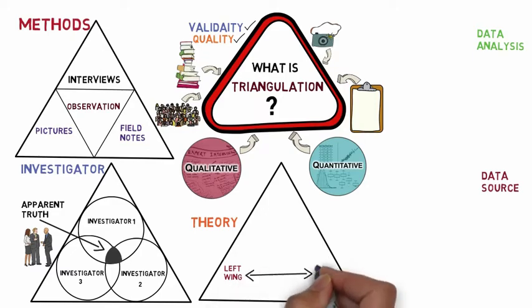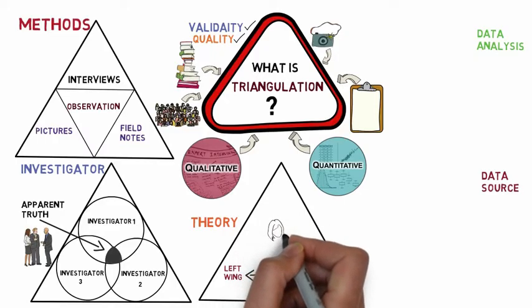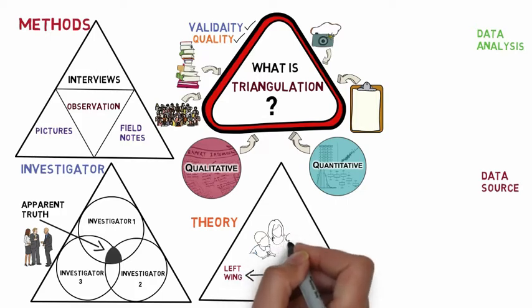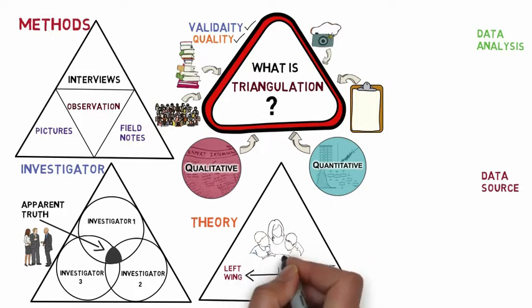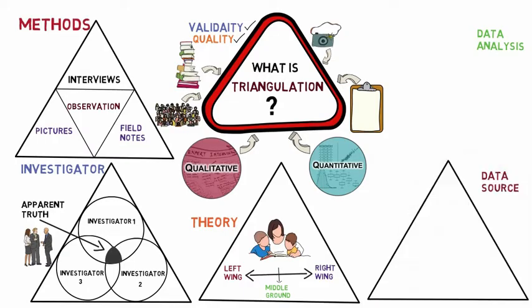The third type is theory triangulation. This refers to the use of different theories to analyze and interpret data. For example, Singer, in one of his studies, used three different theories in his research on why first-born children were more adult-oriented than later-born children. He devised a research strategy to test each of the competing theories.